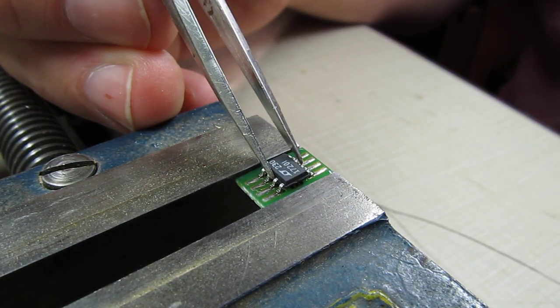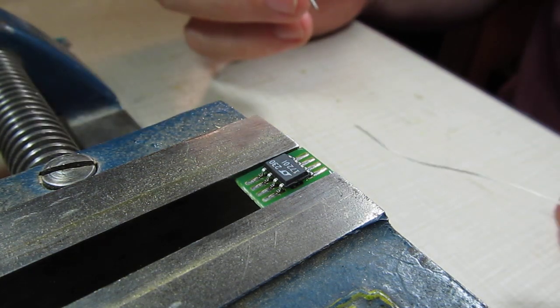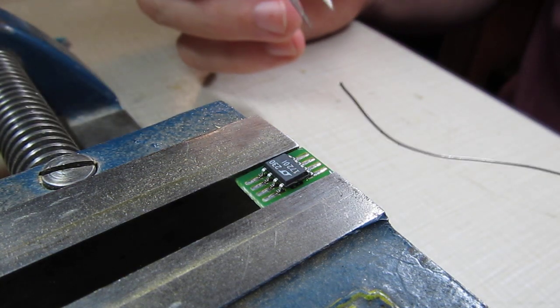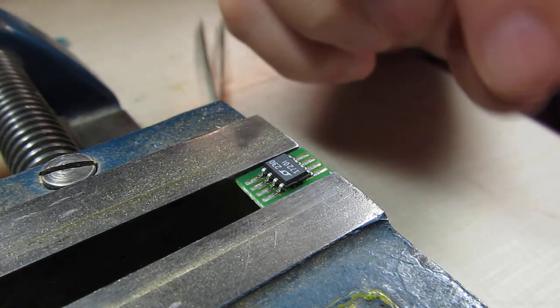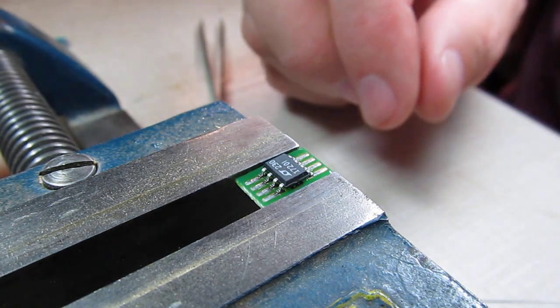So even though I use solder that has flux in the core of the solder, adding a little bit of extra flux especially for surface mount is always really helpful.